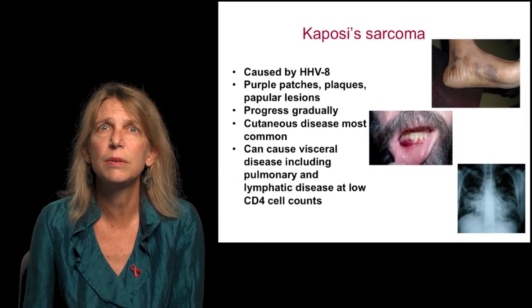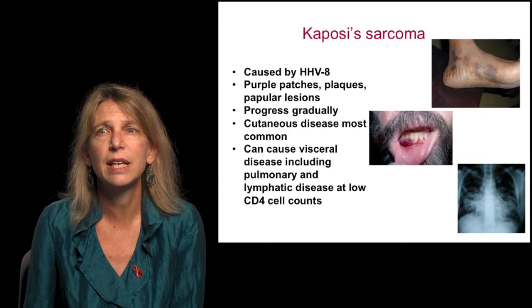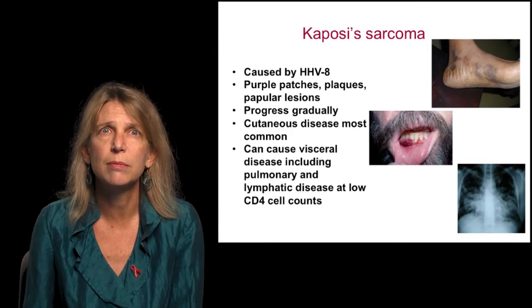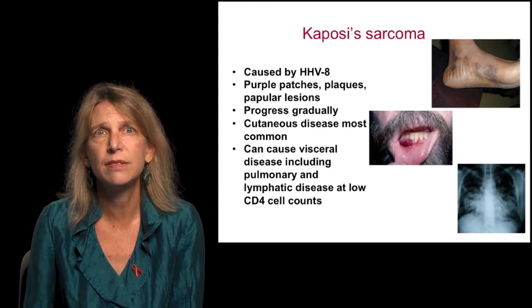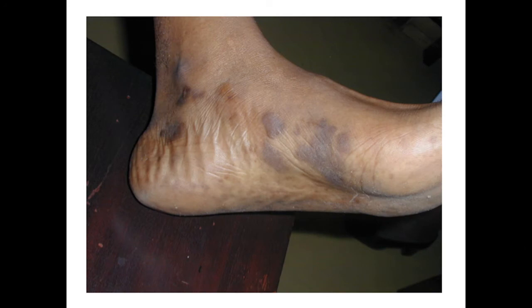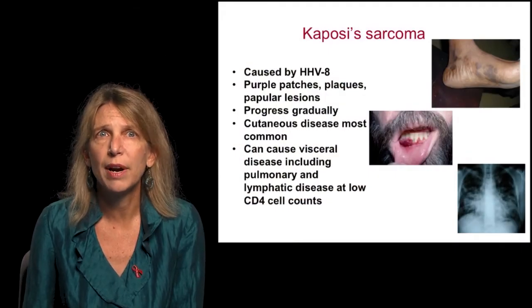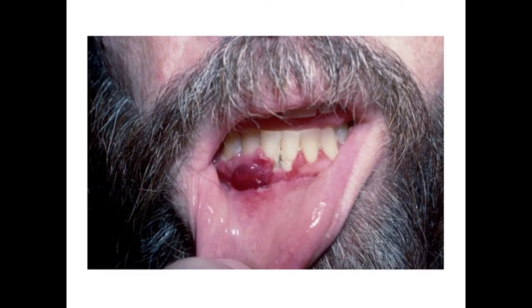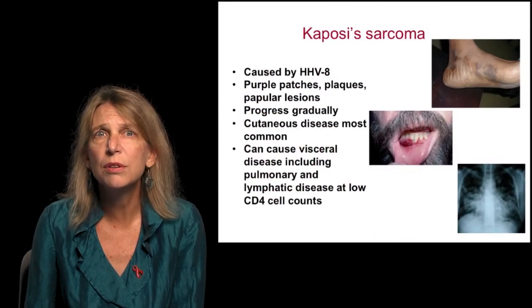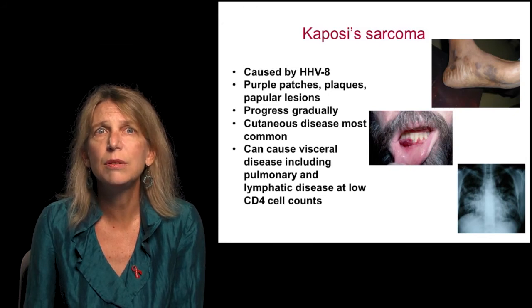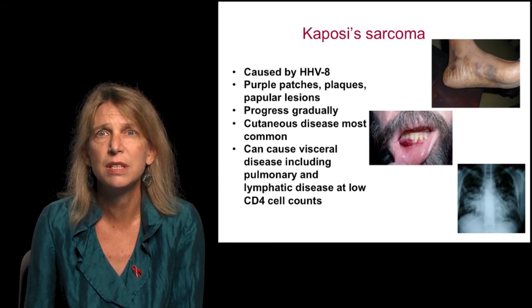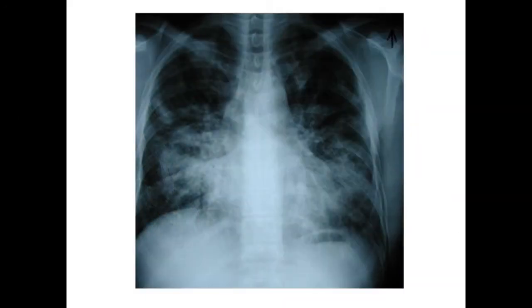Now I will discuss a few of the classic and common AIDS-defining conditions. Kaposi's sarcoma is caused by human herpesvirus 8, or HHV8. As shown here, it is characterized by patients presenting with purple patches, plaques, and papular lesions. These lesions progress gradually. Cutaneous disease is very common, as shown here with lesions on the gum. Kaposi's sarcoma can also cause visceral disease, including pulmonary and lymphatic disease at low CD4 cell counts, with characteristic radiographic findings in pulmonary Kaposi's sarcoma.